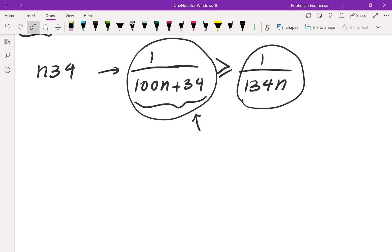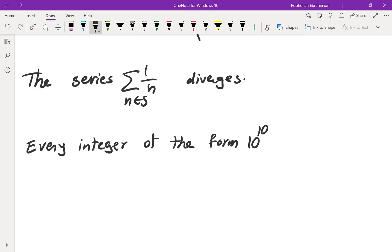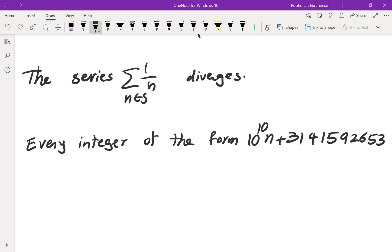Okay, so it becomes pretty clear that the answer is that the series diverges. So now let's see why. The series sum of 1 over n, n in S, diverges. Every integer of the form 10^10 × n + 3141592653 is in S because the last 10 digits are 3141592653.